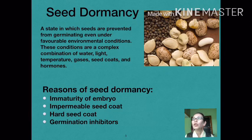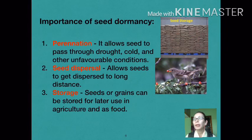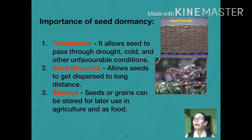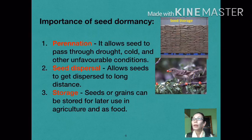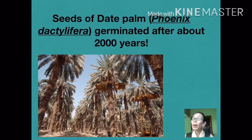Seed dormancy also serves important benefits to plants and to us. Firstly, it allows seeds to overcome unfavorable conditions like drought, acidity, or cold. Secondly, it promotes dispersal of seeds at a desired time and allows transport to new environments. In addition, seed dormancy can facilitate storing of seeds or grains for later use in the food industry, agriculture, or research. Notably, a team of archaeologists in Israel succeeded in growing palm trees from seeds about 2,000 years old, confirming that dormant seeds are still alive.